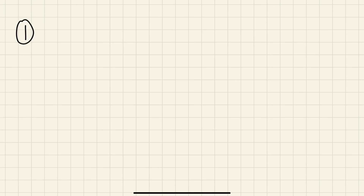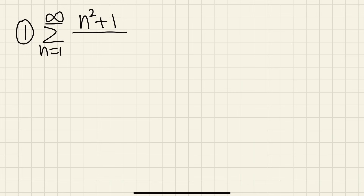Number 1: we have the series as n goes from 1 to infinity of (n² + 1) over (n³ + 4). If we just compare the powers here, n squared over n to the third power is just 1 over n, and we know that series much better.